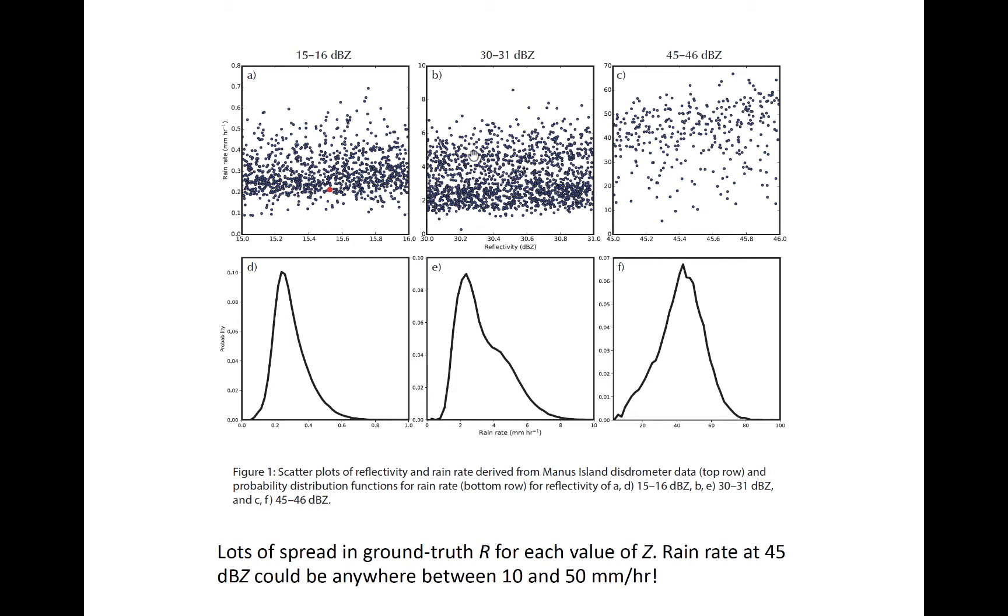For example, in the middle plot here, we can see more clearly how the rain rate ranges from about 1.5 to about 6.5 millimeters per hour.